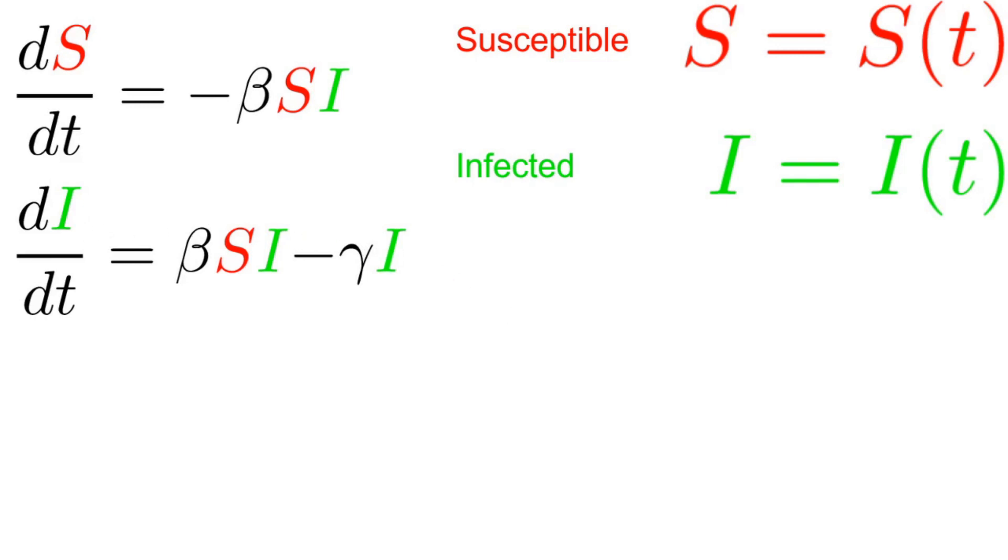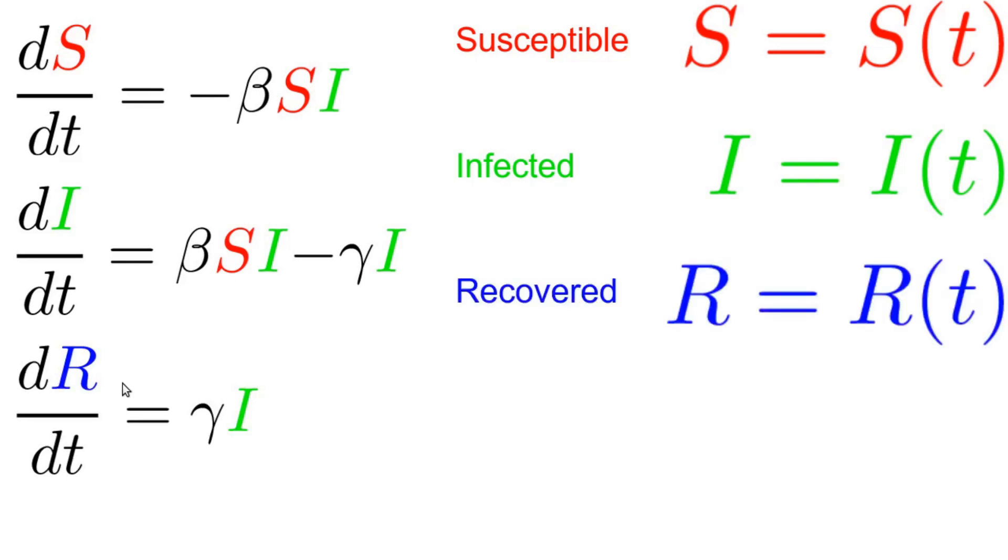Finally, we have our third and simplest equation which describes the rate of change of the quantity R, which represents the recovered population as a function of time. And if you're familiar with calculus a little bit, then you know if the rate of change of R is equal to gamma I, then R itself must be something like the integral of I. So that's a simpler relationship for us to figure out.